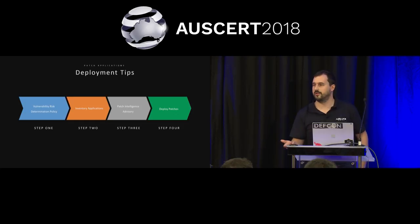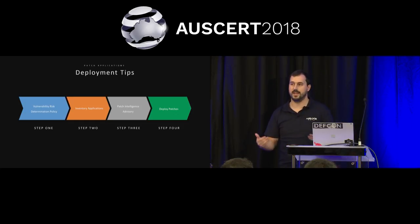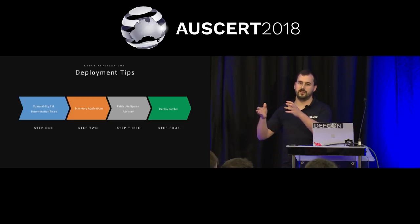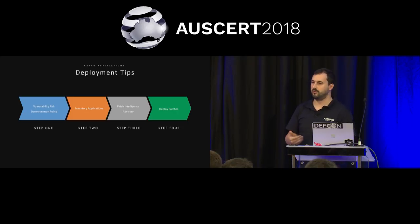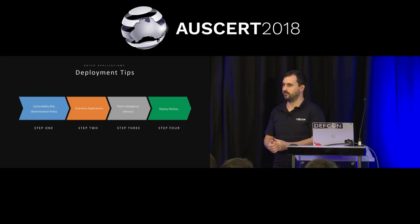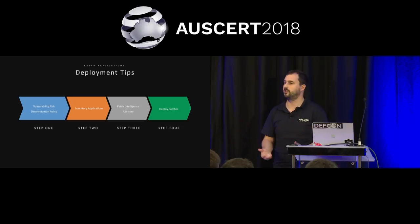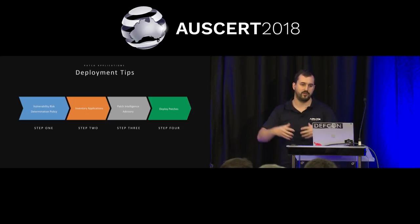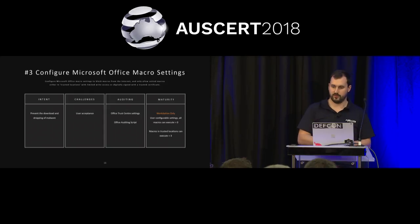Step two: inventory your applications — understand what applications you have out there in the environment. Step three: patch intelligence advisory — getting information about when vulnerabilities exist for those applications. If you're not buying a service to do this, subscribe to security response feeds like the Microsoft Security Response Centre on Twitter, the Adobe Security Research Team, and work with your major vendors to understand how they notify you when vulnerabilities come out. Step four: deploying your patches.